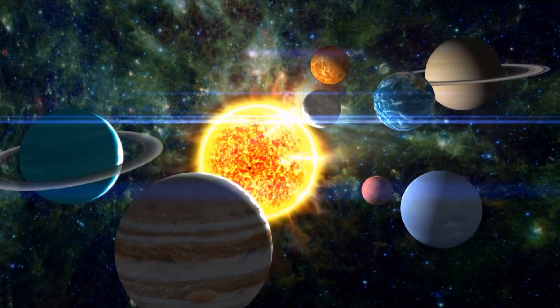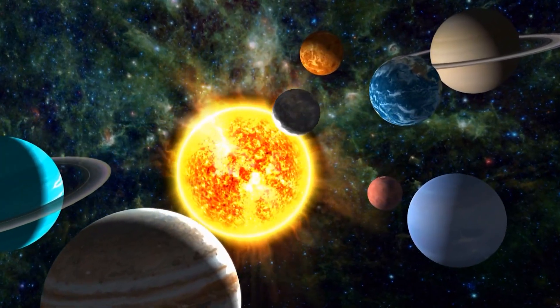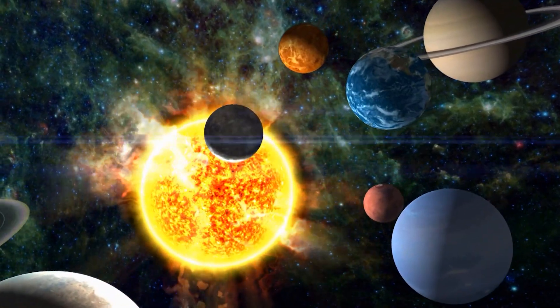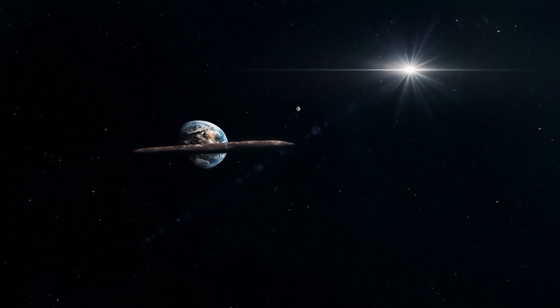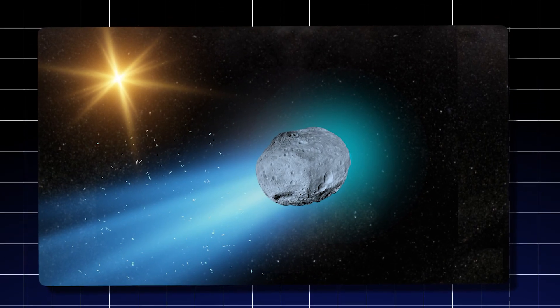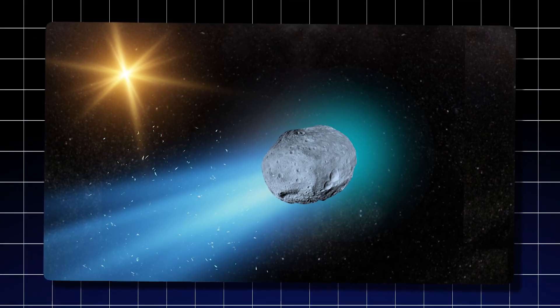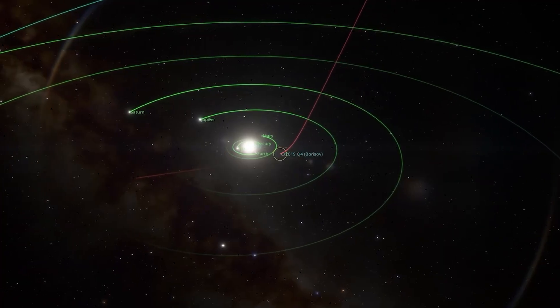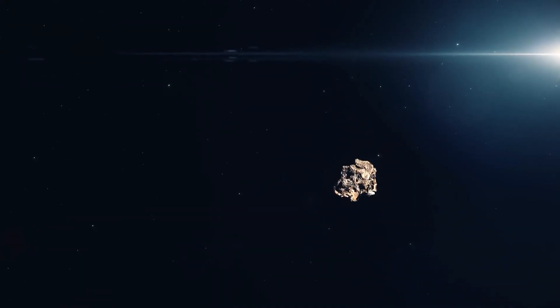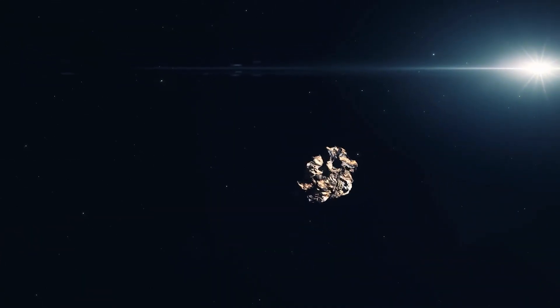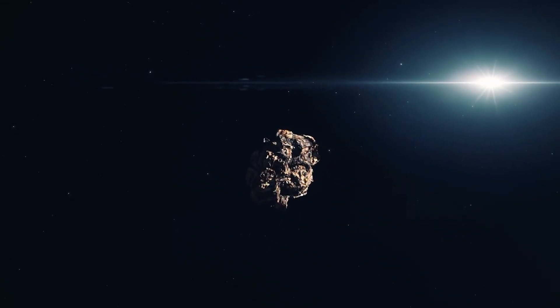A collision of this magnitude also reshapes our understanding of the risk landscape in the solar system. Until now, most focus has centered on Earth-crossing asteroids and comets. But here is a case where an interstellar object, not gravitationally bound to the Sun, nevertheless intrudes deeply, crossing planets and striking one. It forces us to expand our threat models and reassess how we track and characterize interstellar interlopers.